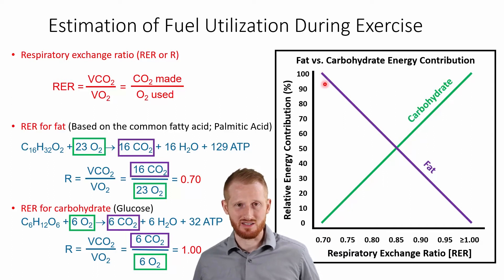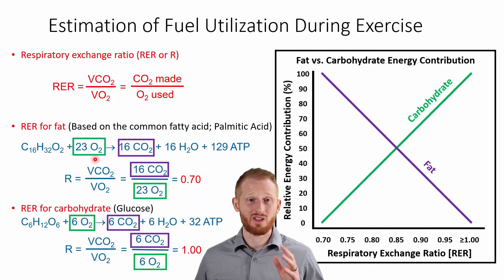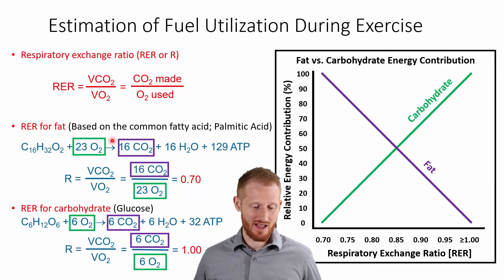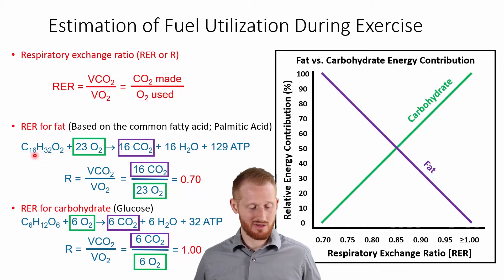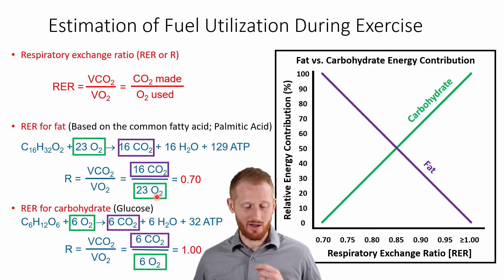Let's talk about how these calculations work. For the RER for fat, we'll use the common fatty acid palmitic acid as our example — it is C16H32O2. As we oxidize or burn this fatty acid, we add oxygen; on the yielding side of the equation we get CO2, H2O, and energy (ATP). Balancing this equation for palmitic acid gives us 16 CO2s and 23 O2s. So doing the RER calculation — CO2 produced divided by oxygen consumed — you end up getting 0.70, the beginning of our scale where it's mostly fat.